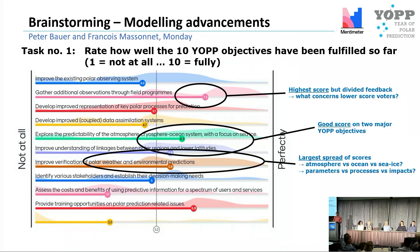The answer with the largest spread was verification, with two explanations. First, it may reflect different communities — verification may have been successful for the atmosphere but less so for ocean or sea ice. Second, different communities don't use the same verification metrics: operational forecasters like skill scores and correlations, model developers prefer fluxes and temperatures, while users want forecasts verified at their specific location.